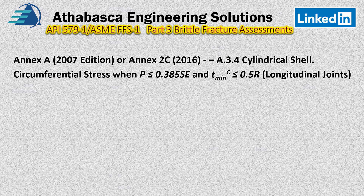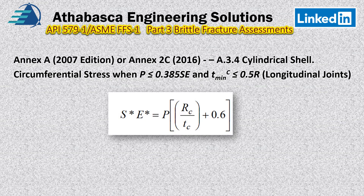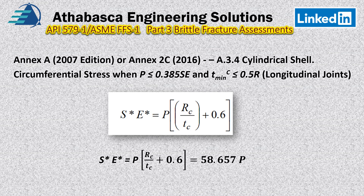Next, we rearrange the circumferential stress equation in terms of stress and joint efficiency to develop a relationship for plotting the graph. Using the radius and thickness calculated earlier, we get a relationship: SE = 58.657 × P, where P is the pressure. From there we can continue to develop our equations and graph.